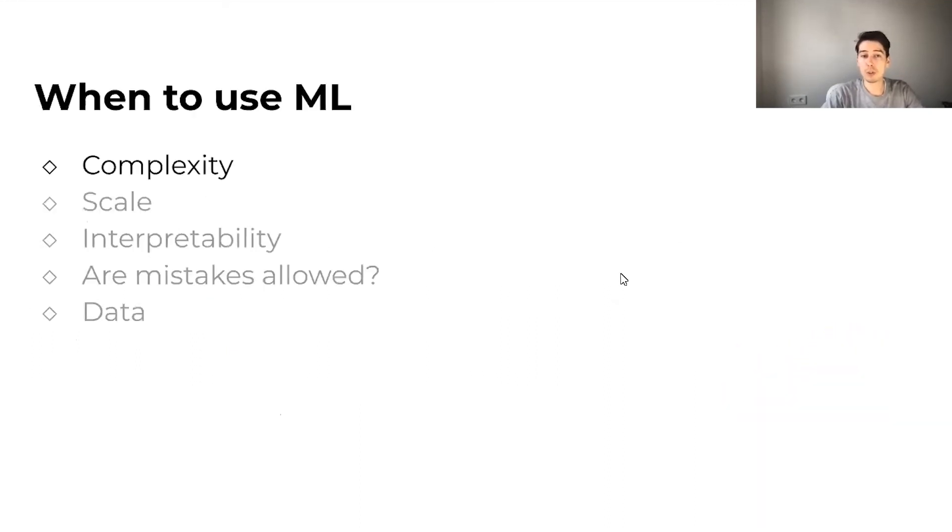There are several questions we need to ask ourselves when we are considering using machine learning in our project. The first one is the complexity of the problem you are trying to solve. If the problem you are solving is less complex, I would recommend you to use simple rules or if statements instead of machine learning. For example, if we have an e-commerce platform and we want to launch a new hot deals section, it would be much easier just to select products that are currently on sale or had the most orders in the last 24 hours. And it would actually work really good.